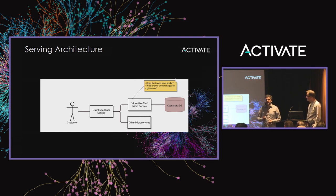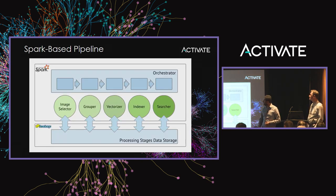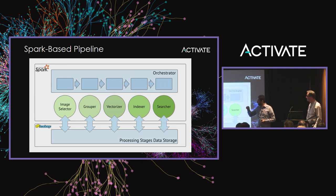That simplicity gives us the ability to easily test different models in production and run them through AB testing. From the other side, how we generate the model is a batch job — a Spark-based pipeline pulling images through five steps.